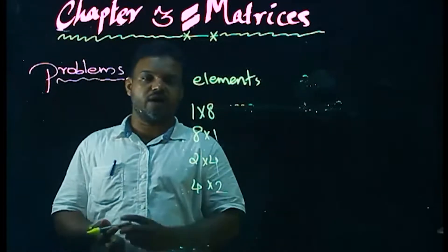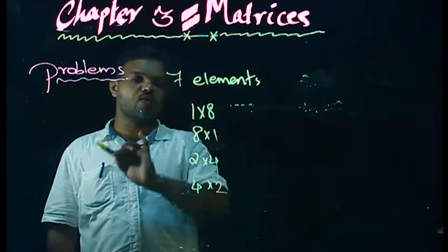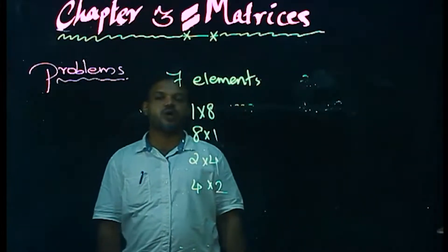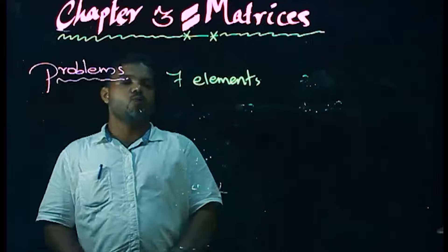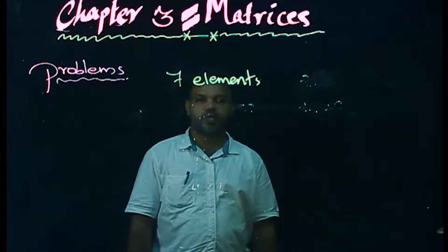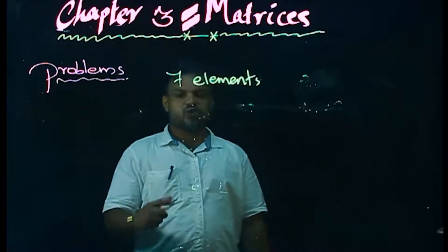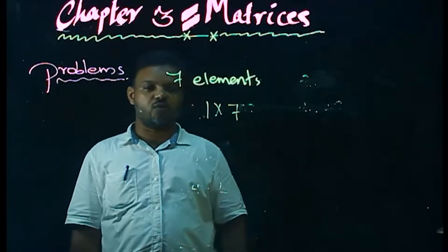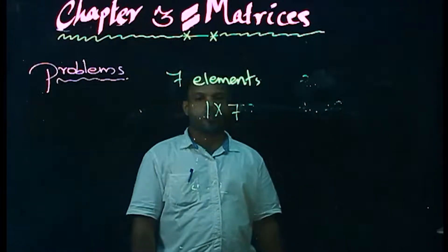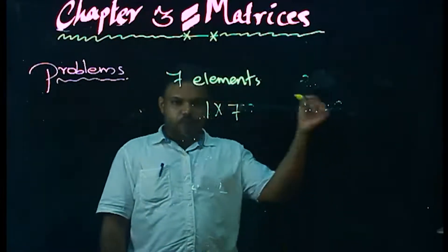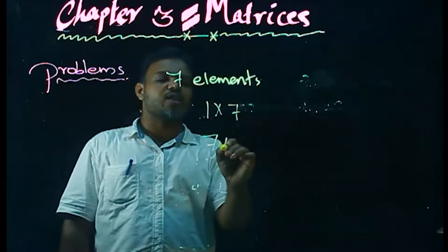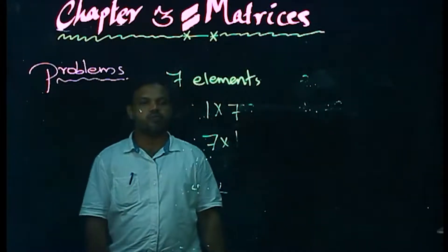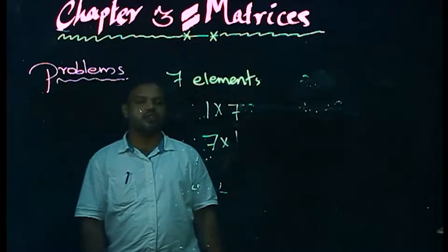Another question: if a matrix has 7 elements, what are the possible orders it can have? Since 7 is a prime number, the only factor pairs are 1 and 7. So the possible orders are 1 by 7 and 7 by 1.